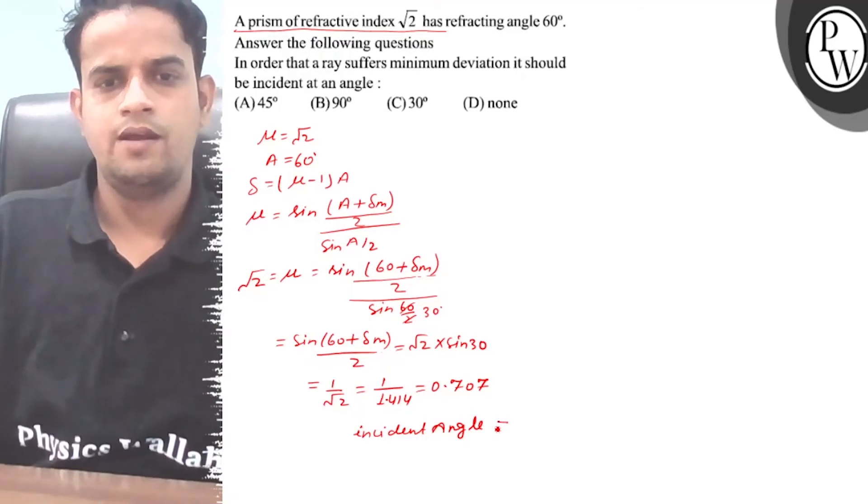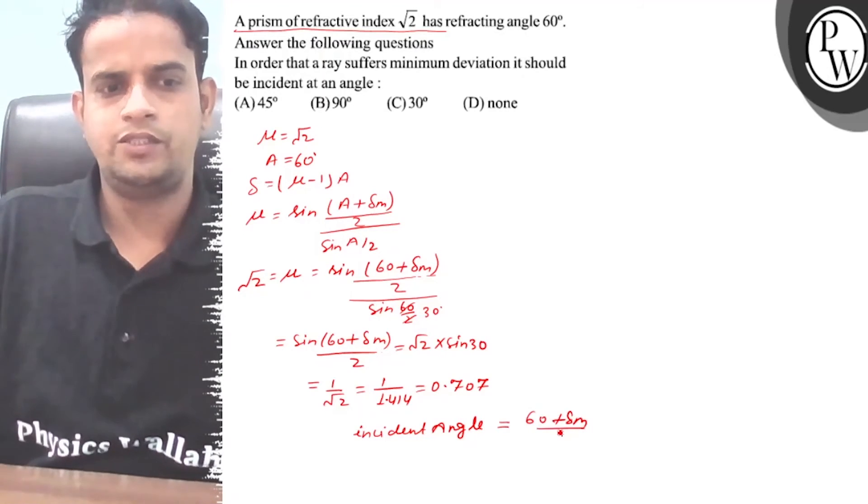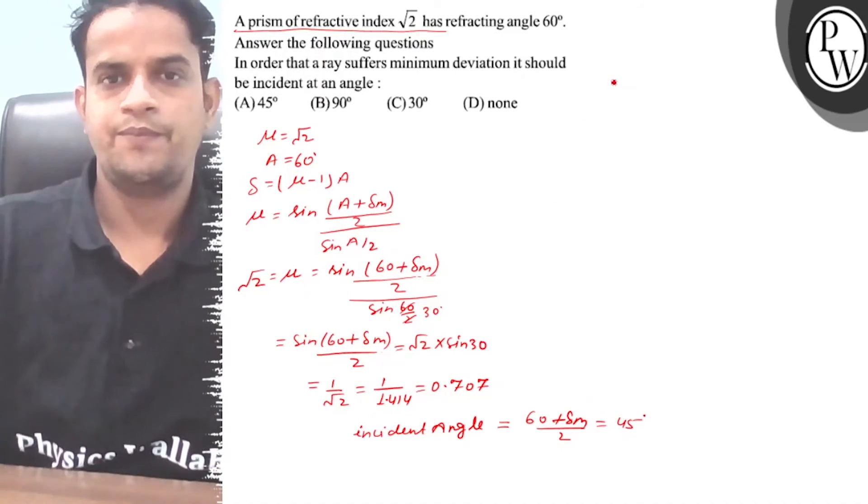60 plus δm by 2 equals 45. Now δm equals 90 minus 60, so δm equals 30.